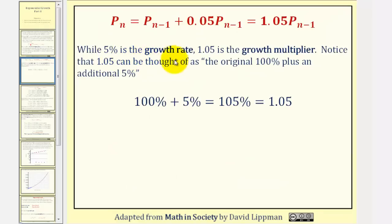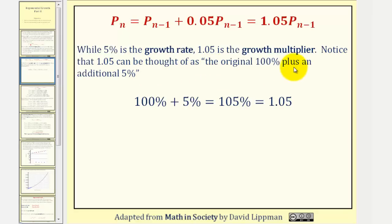While 5% is the growth rate, 1.05 is called the growth multiplier. Notice that 1.05 can be thought of as the original 100% plus an additional 5%. One hundred percent plus five percent equals one hundred five percent, which expressed as a decimal would be 1.05.